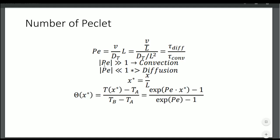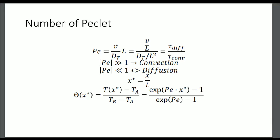If the Péclet number is greater than one, convection effects dominate. When it is less than one, the diffusion regime dominates.